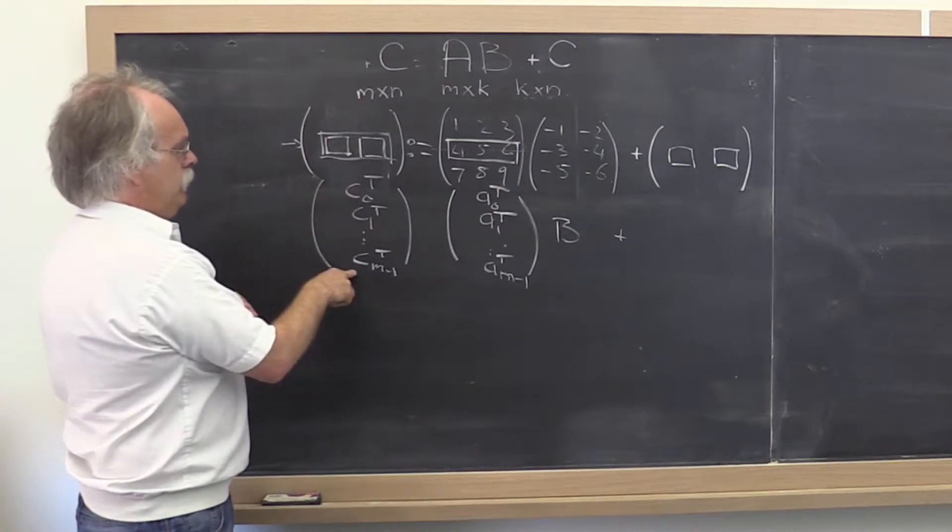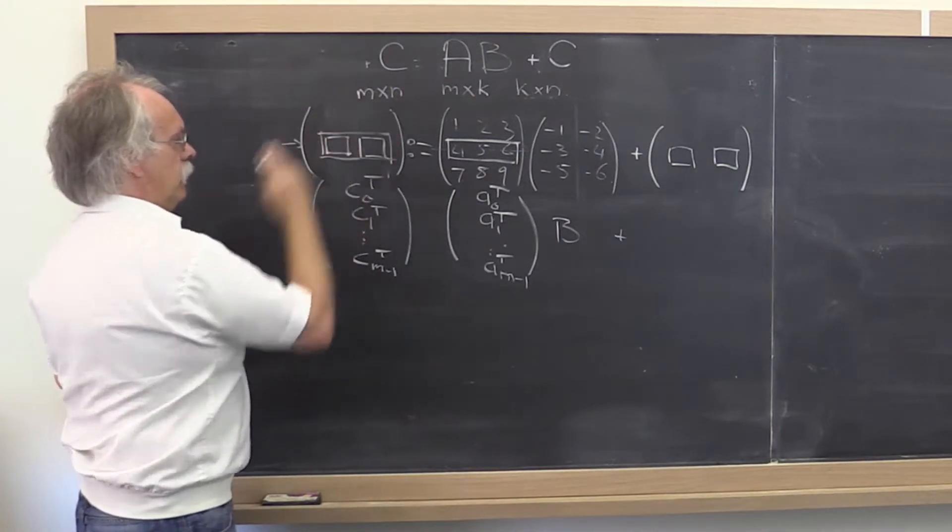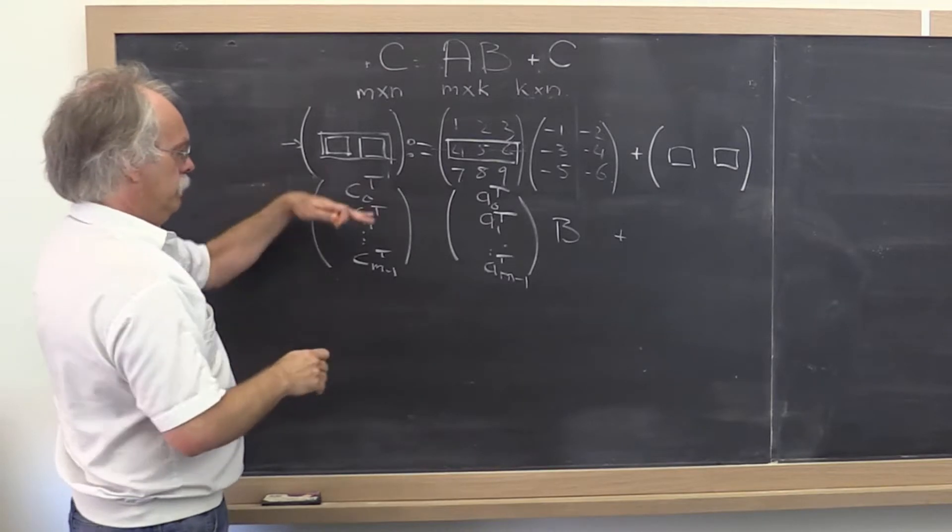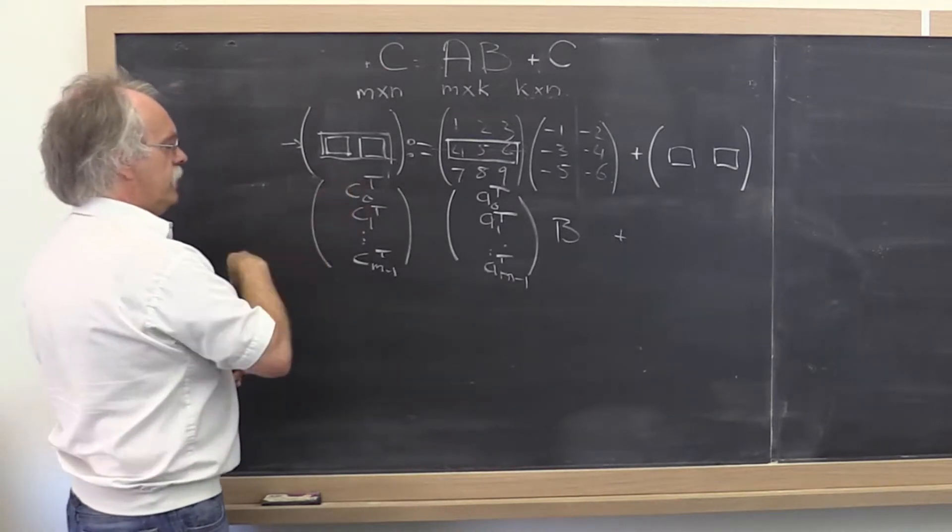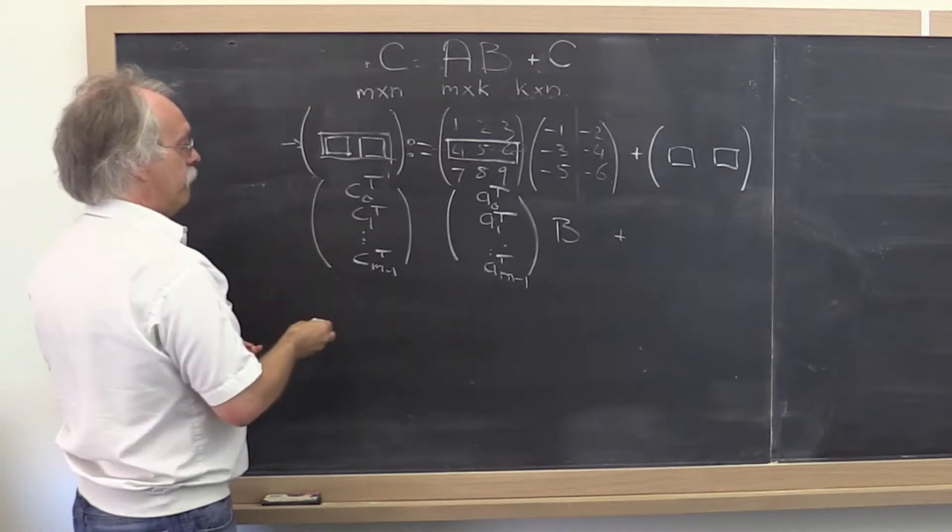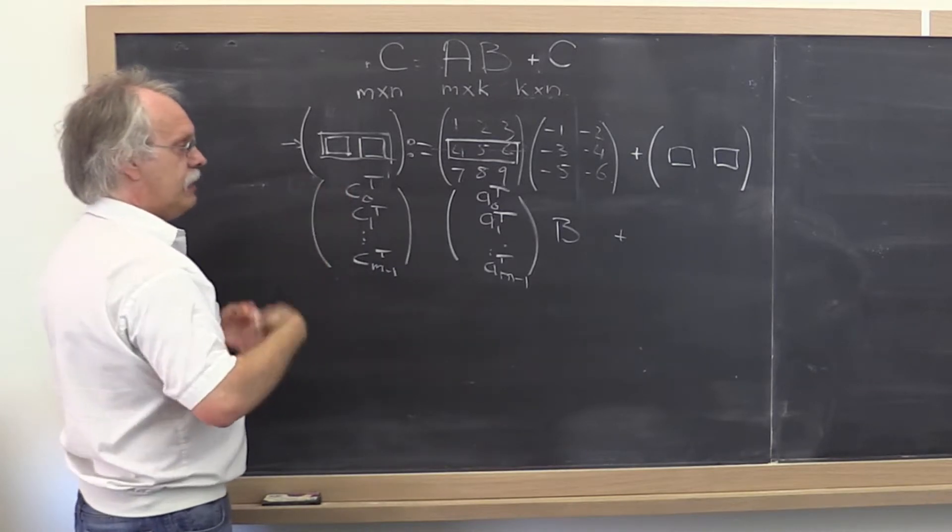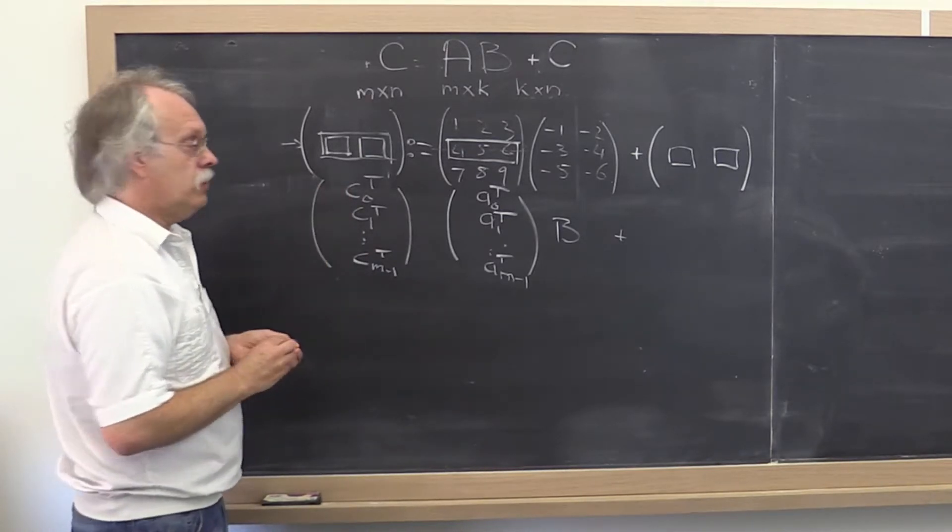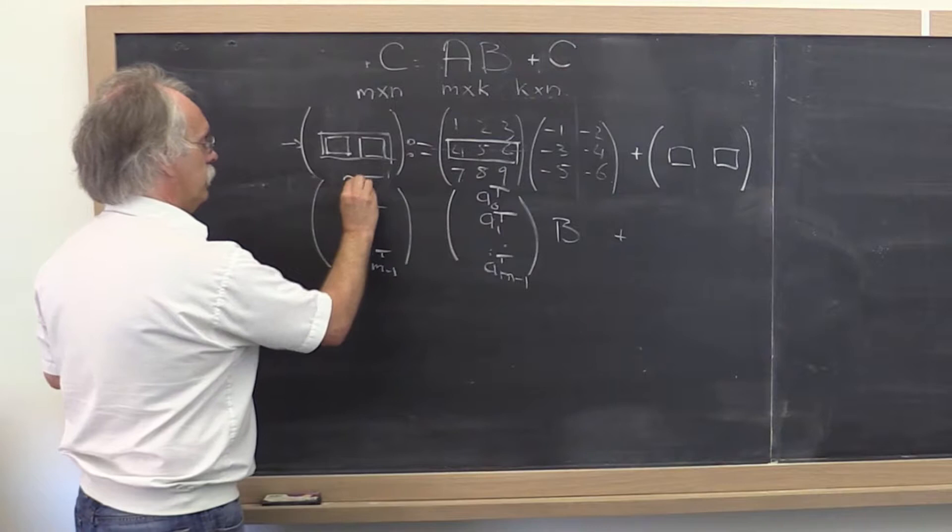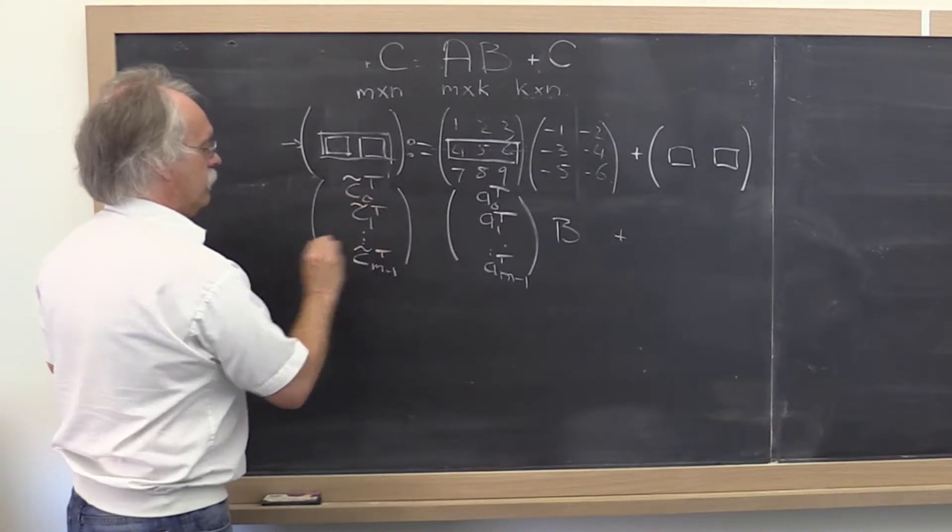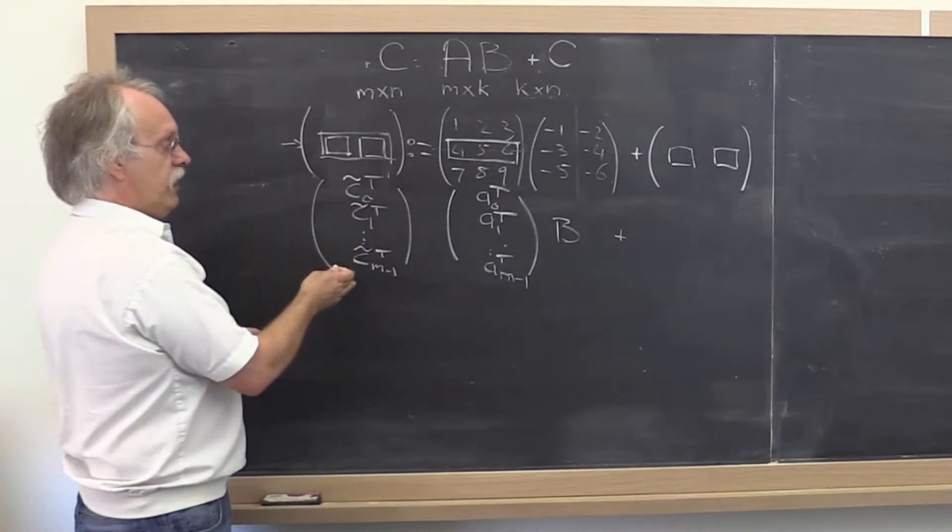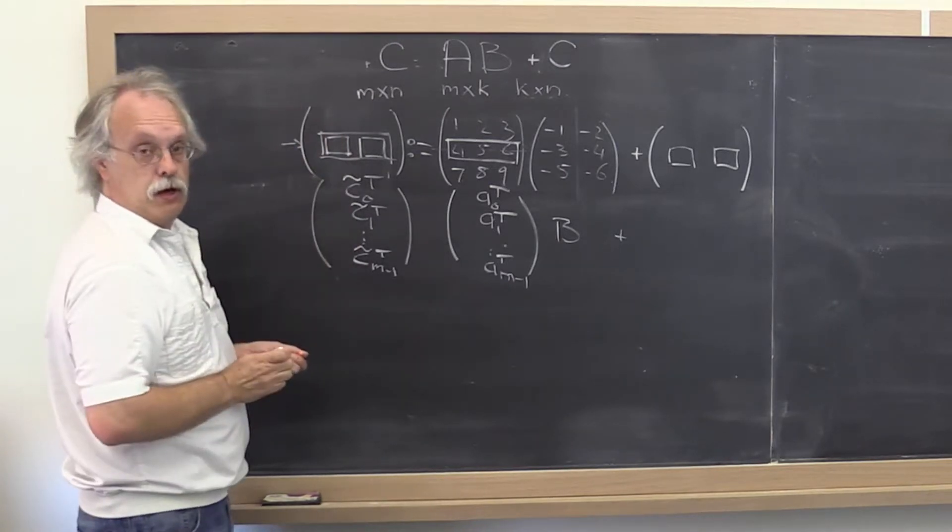Now we might get confused between C0 being a column of A versus it being a row of A. So let's actually put something on top of that. We shouldn't put a hat on it because hat we used for original contents. So let's put a tilde on top of this to indicate that these are different labels than the labels we used for the columns.